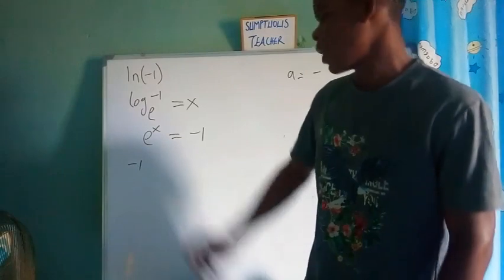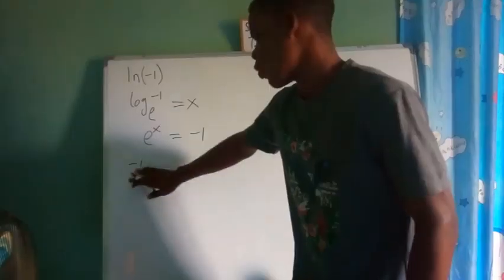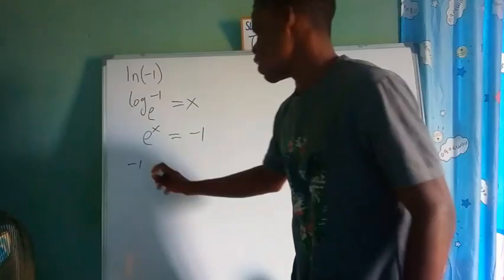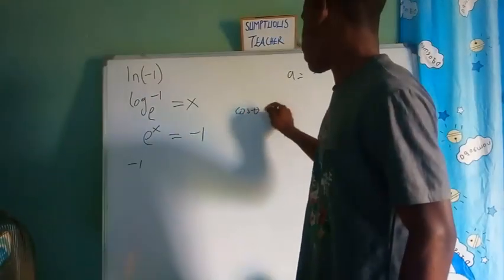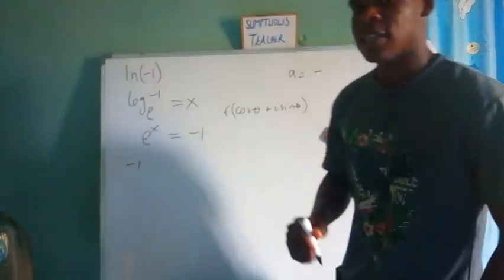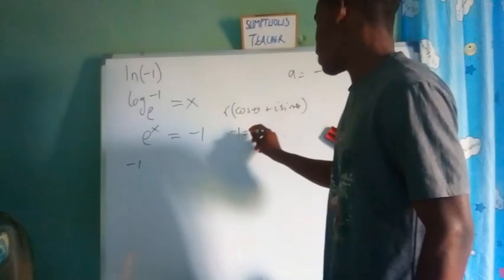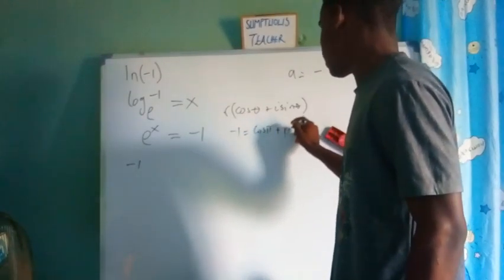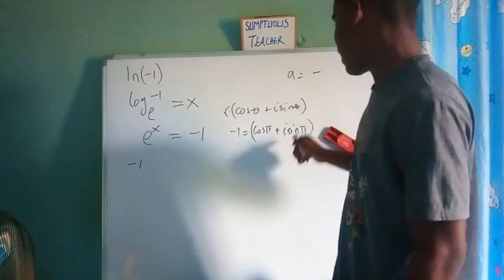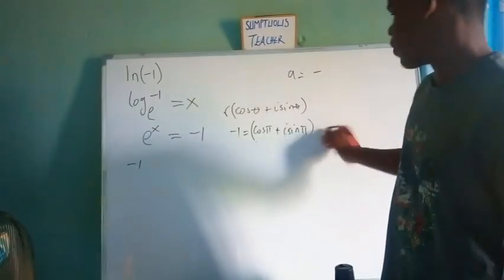Let's consider negative one in a different way. In complex numbers, when we present a number in modular-argument form, or polar form, we have r times (cosine θ + i·sine θ), where r is the modulus and θ is the argument. Negative one equals cosine(π) + i·sine(π), where r is one. Cosine(π) is negative one, and sine(π) is zero, so i times zero is zero — giving us negative one.